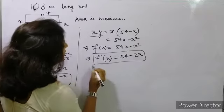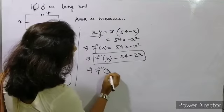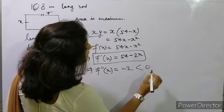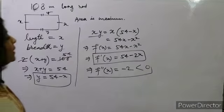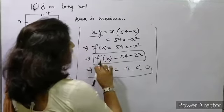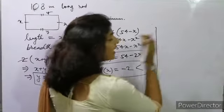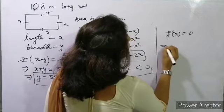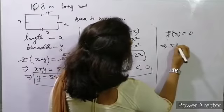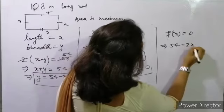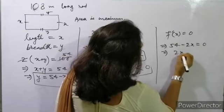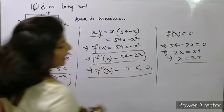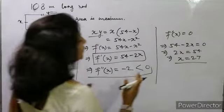We also find f''(x). f''(x) = -2, which is less than 0. For maximum, f'(x) = 0, so 54 - 2x = 0, which gives 2x = 54, therefore x = 27.